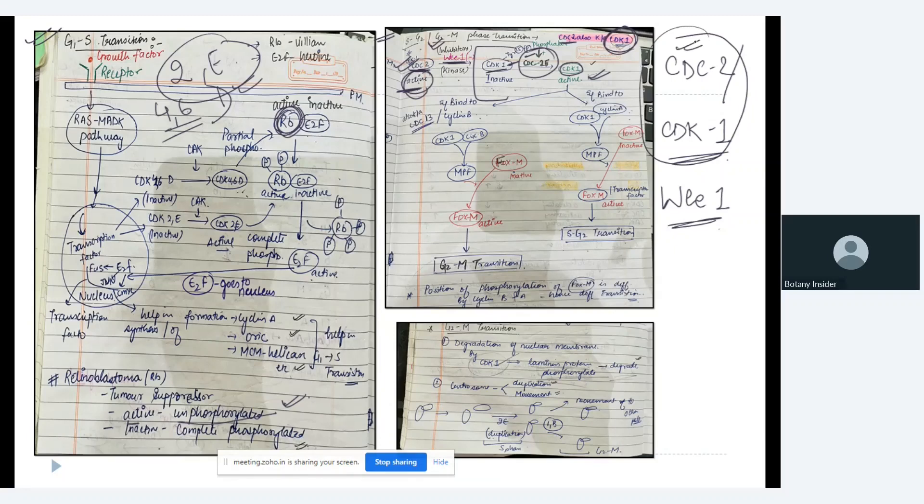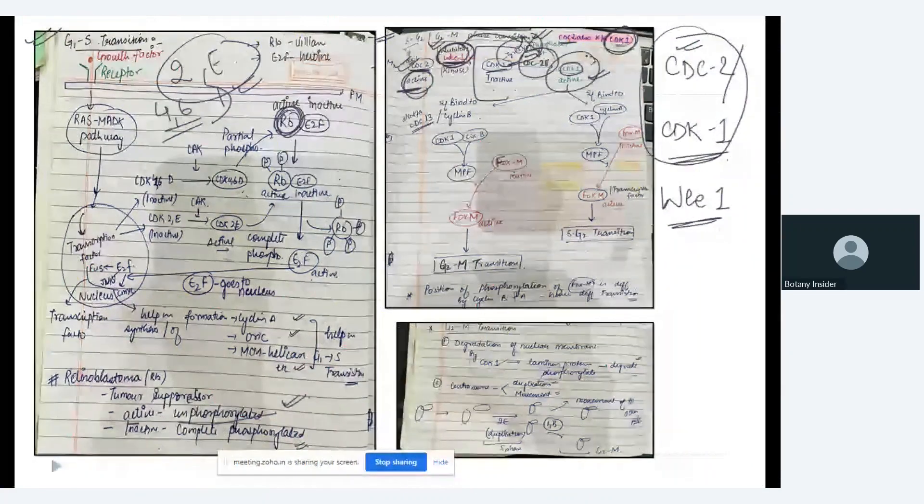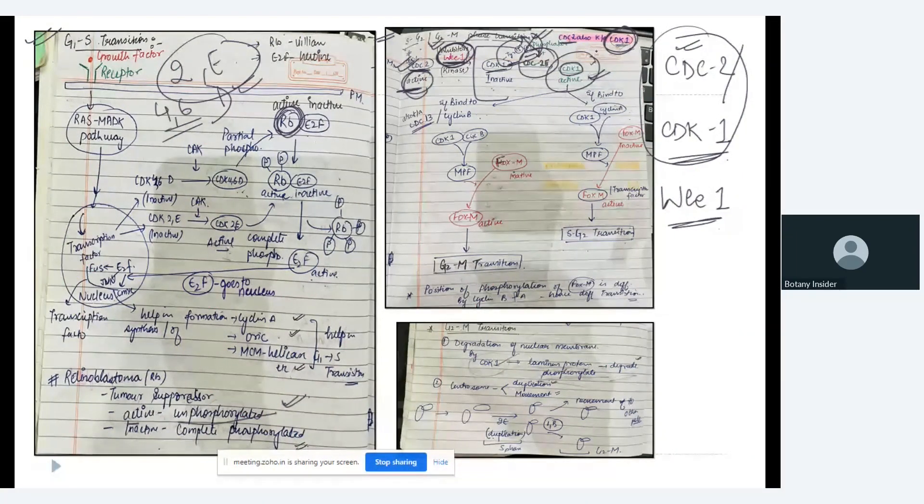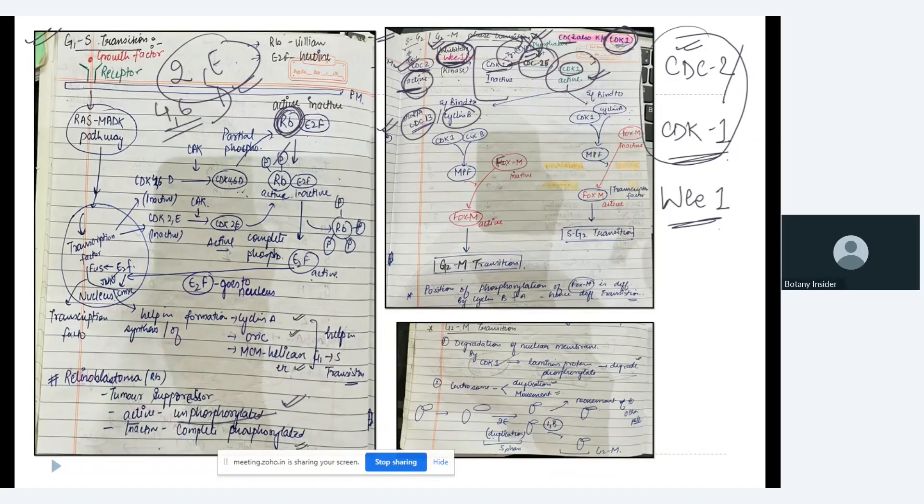If it binds to CDC13 and also cyclin B, what happens? We have CDK1 and cyclin B. They both bind together. Therefore, MPF, which is maturation promoting factor, activates and maturation promoting factor is activated.